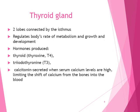So let's talk about the thyroid gland. It has two lobes connected by the isthmus. It regulates the body's rate of metabolism and growth. The hormones it produces include thyroxine — T4 — and triiodothyronine — T3. It also releases calcitonin, which is secreted when serum calcium levels are high, limiting the shift of calcium from the bones into the blood.